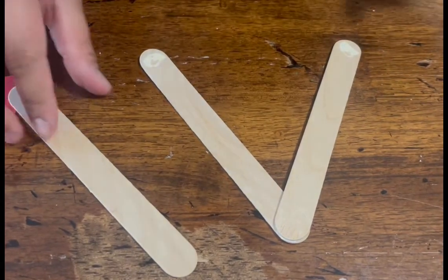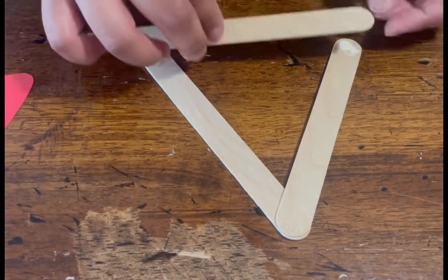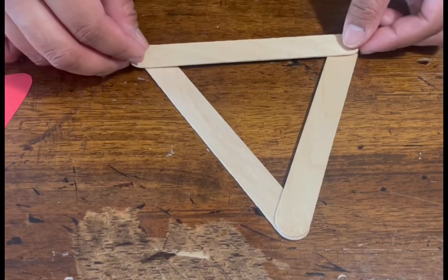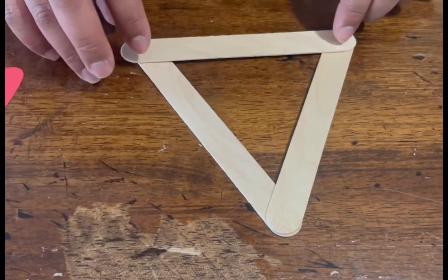And then grab your last popsicle stick, put it on top of that. So now you have your triangle shape popsicle stick.